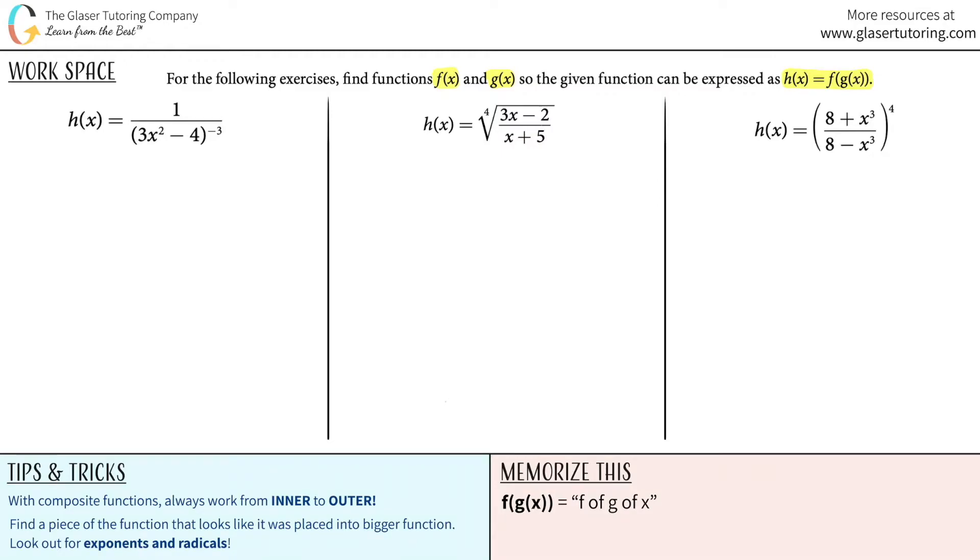Always go back to the notation that they want it as. They want it as h of x equals f of g of x. Which one is the outer function, and which one is the inner one? The inner function is the one that's more inside parentheses. So the g of x function would be the inner function. It's inside. And the f of x function is the outside function.